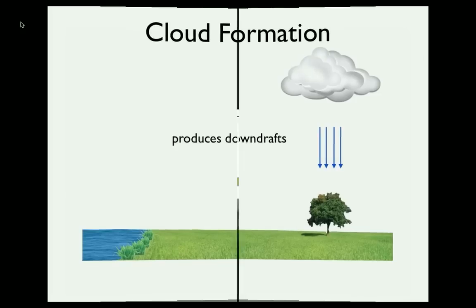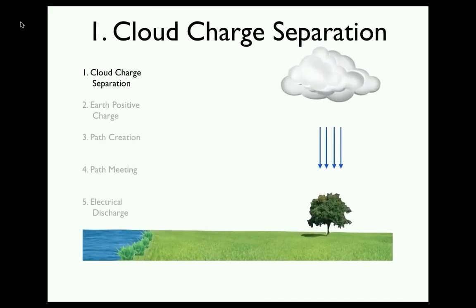When downdrafts strike the ground, they spread out in all directions, which is the wind often felt before a lightning storm. These opposing updrafts and downdrafts create the first stage of lightning, which is called cloud charge separation. Positive and negative charges within the cloud are separated, with the positive charges at the top and the negative charges at the bottom.